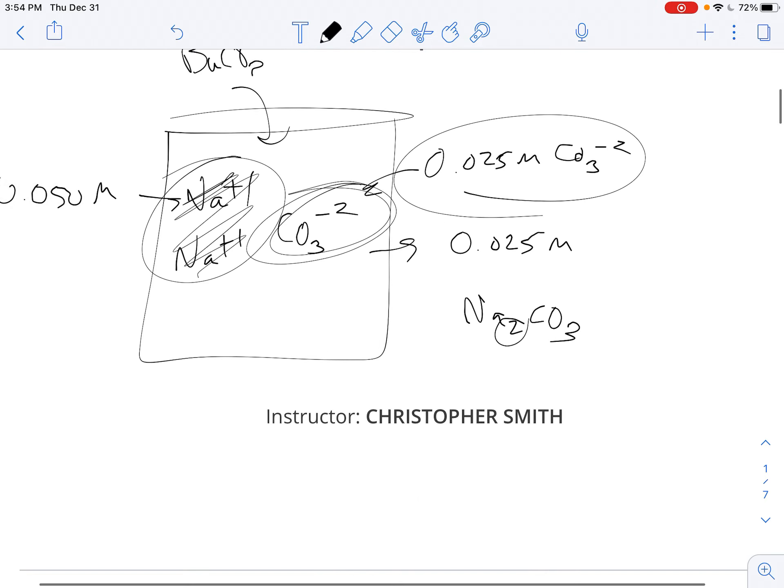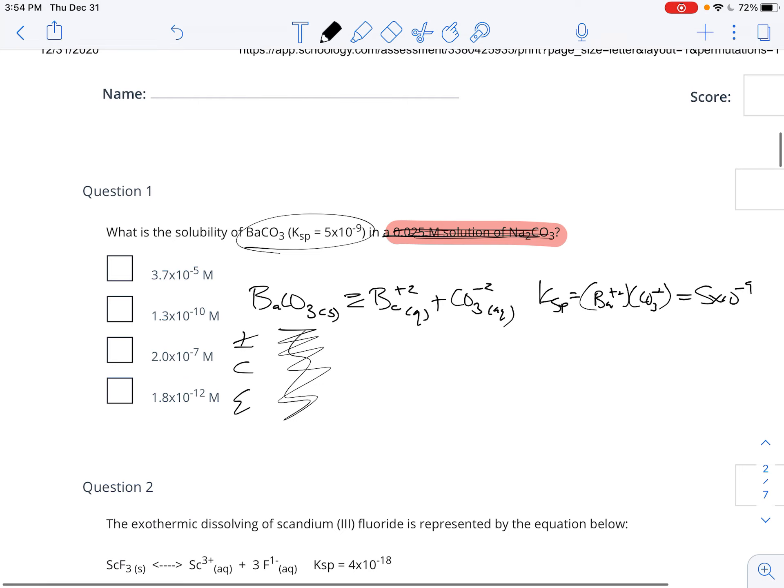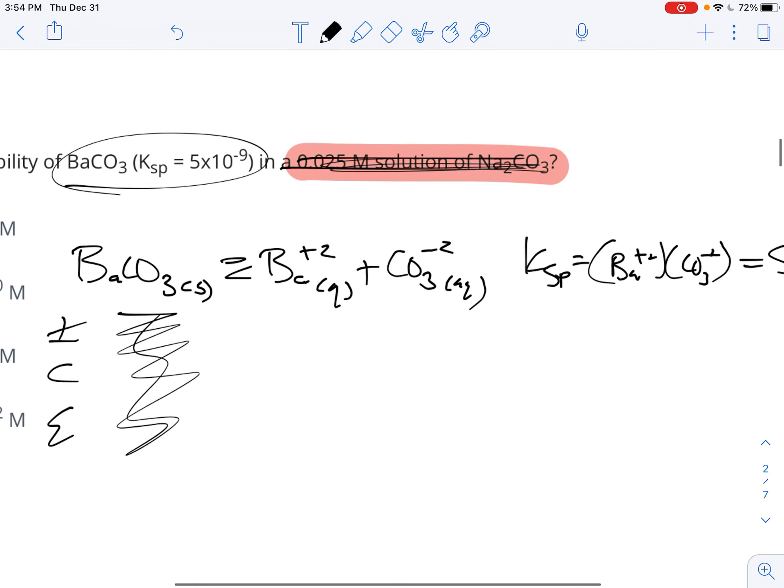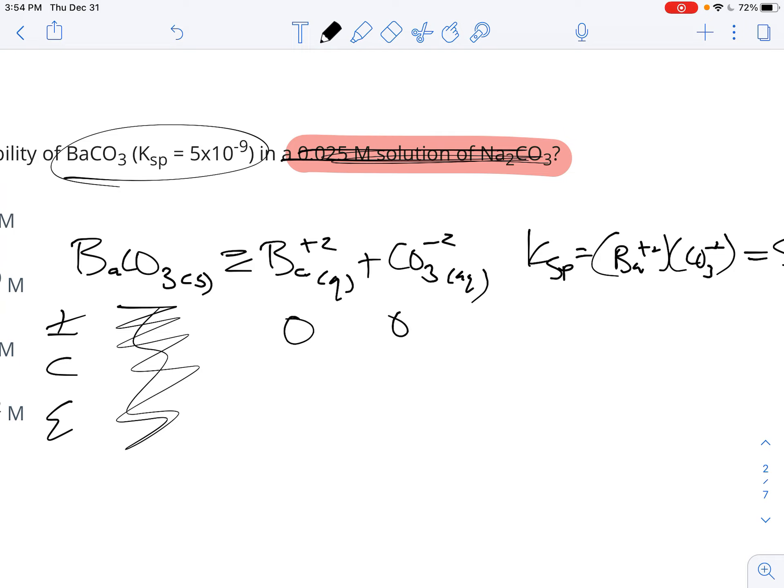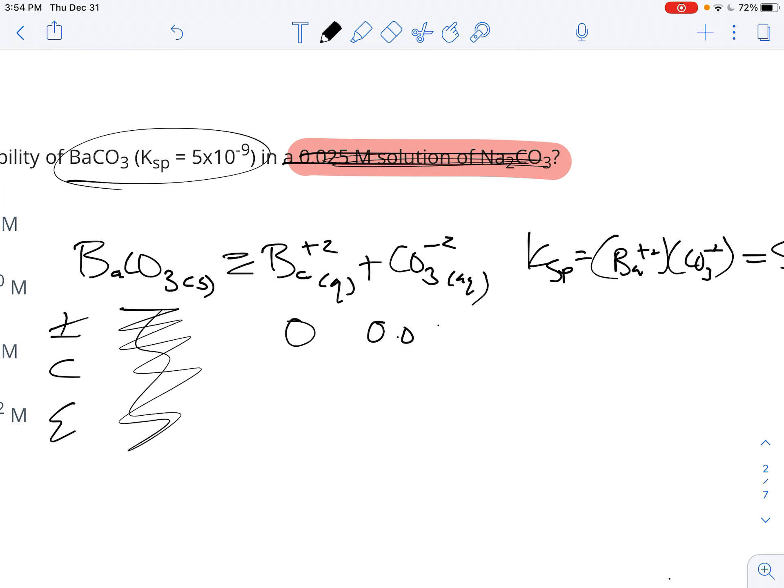What about the sodium? Who cares about the sodium? The sodium is not involved in our system here. So consequently, our initial is not zero and zero like it normally is. Our initial is zero for the barium, but it is 0.025 for the carbonate.